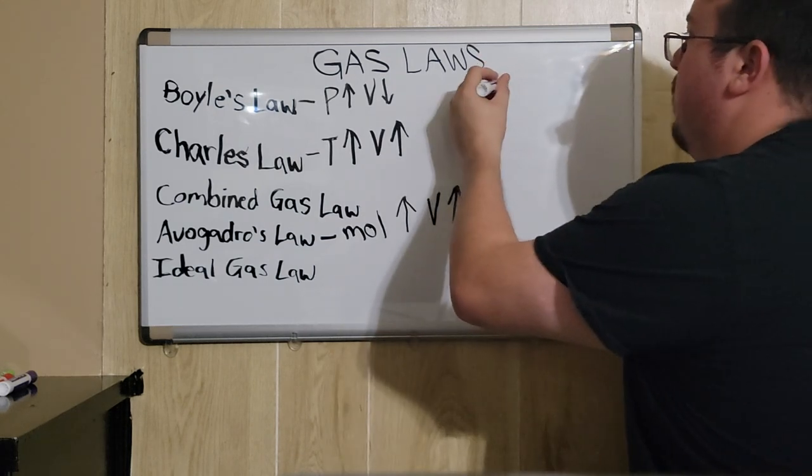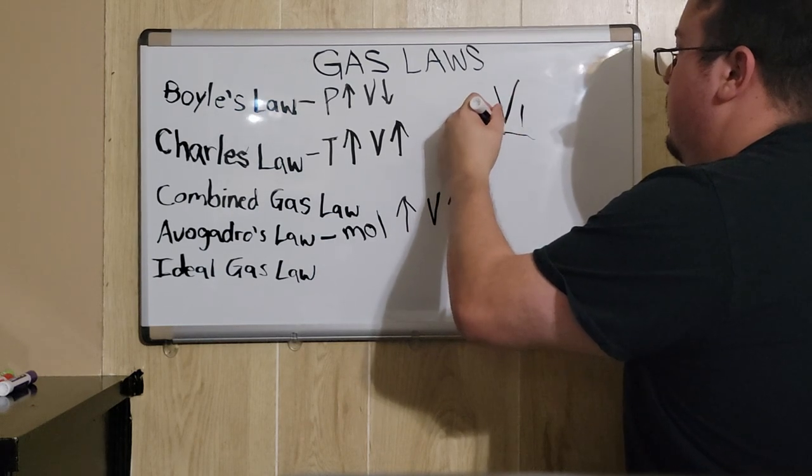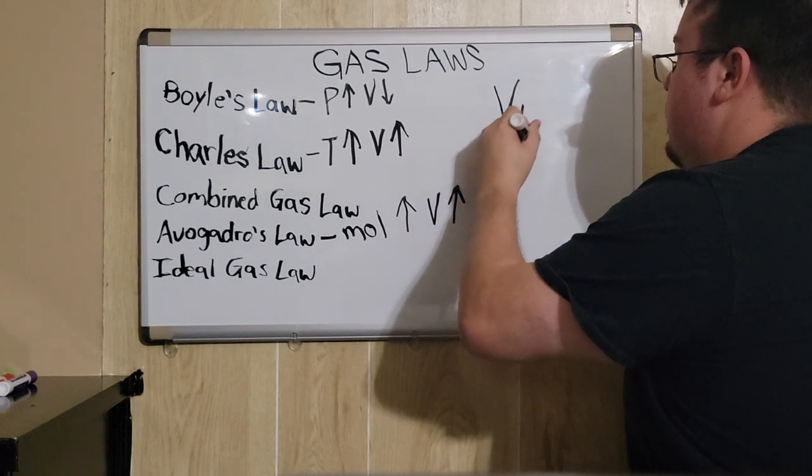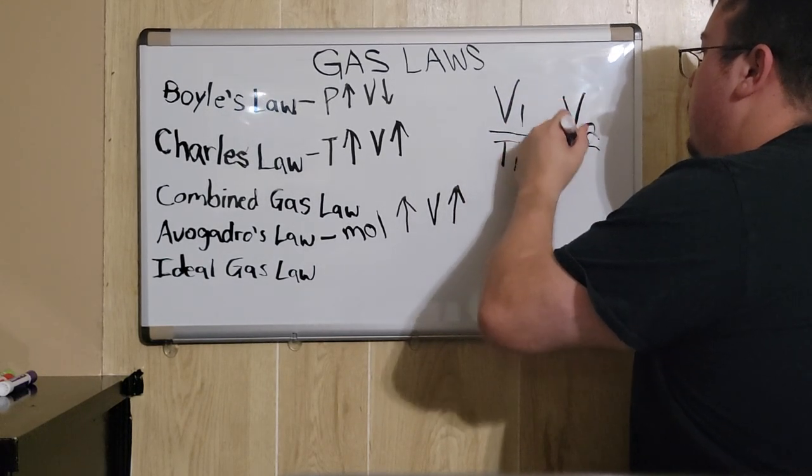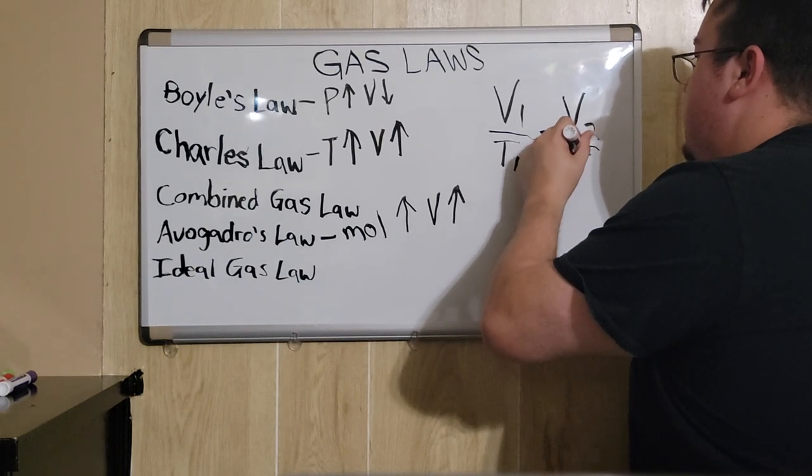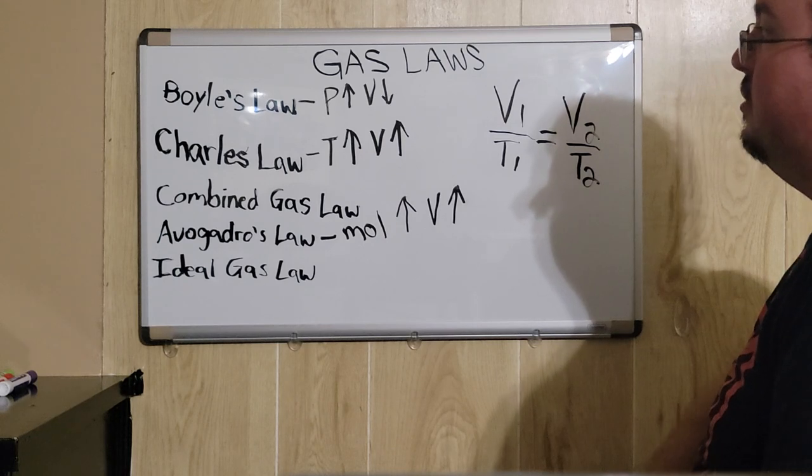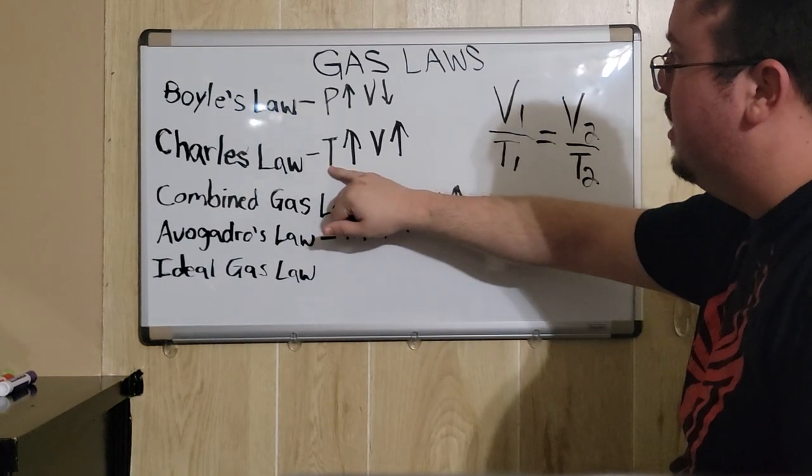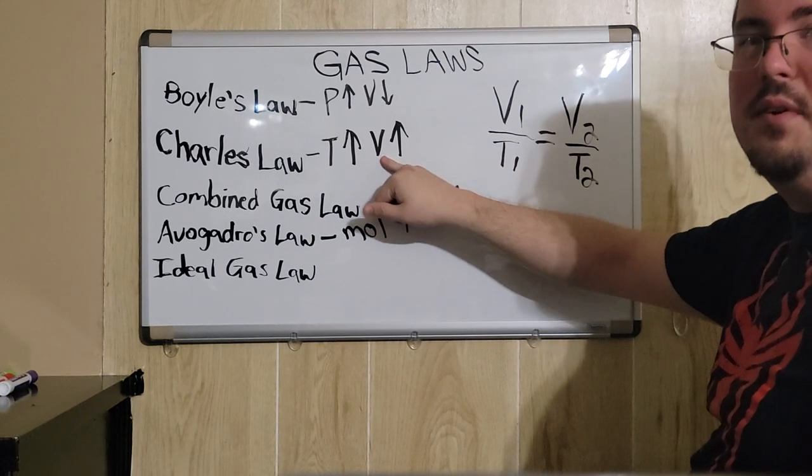As far as the formula that's represented, V1 over T1 equals V2 over T2. Basically, what it's establishing is that if the temperature increases, the volume will also decrease, and vice versa.